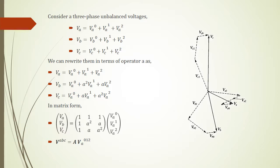We have a three-phase unbalanced voltage in general, and we can rewrite them with the operating vector A and convert it into matrix form. We define this matrix as matrix A, which is very important for our calculation later.